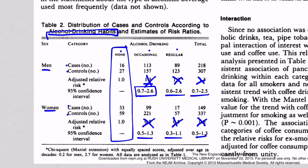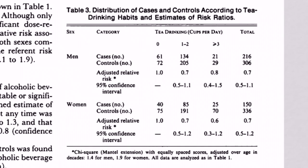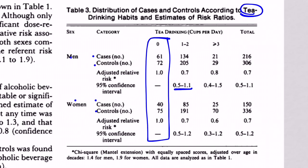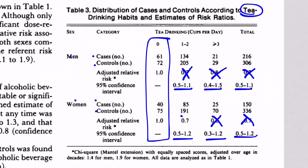Table 3 looks at tea drinking habits and risk ratios. Same setup — cases and controls, men and women — with groups drinking zero, one to two, or greater than three cups of tea per day. The zero-cups group is our referent. All confidence intervals include one. You might say it's trending toward a protective effect since one value is 0.7, but it's not statistically significant, so you can't really say that. For women, same result. We cannot find any association between tea drinking and pancreatic cancer.